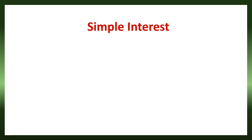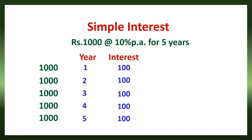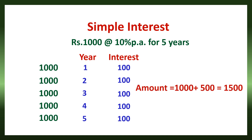We have studied how to find simple interest. Now, let us go back to the previous example. A friend has borrowed Rs. 1000 at 10% per annum for 5 years. What should be repaid after 5 years? That repayment includes the Rs. 1000 principal plus the interest for 5 years — 100 for each year — making the total interest 500. So, the amount to be repaid after 5 years is 1500.